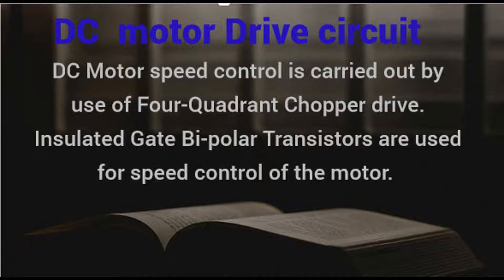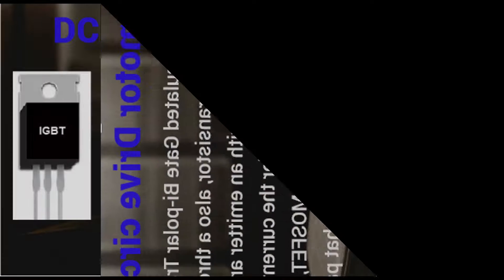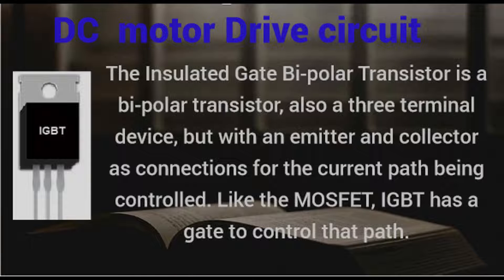Insulated gate bipolar transistors are used for speed control of the motor. The insulated gate bipolar transistor is a bipolar transistor — also a three-terminal device — but with an emitter and collector as connections for the current path being controlled. Like the MOSFET, the IGBT has a gate to control that path.